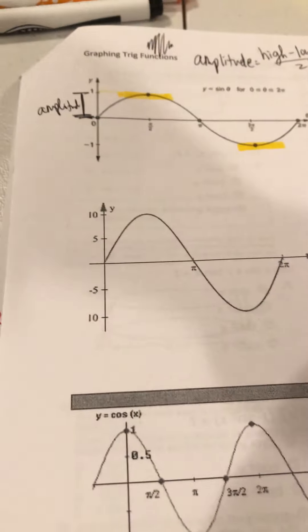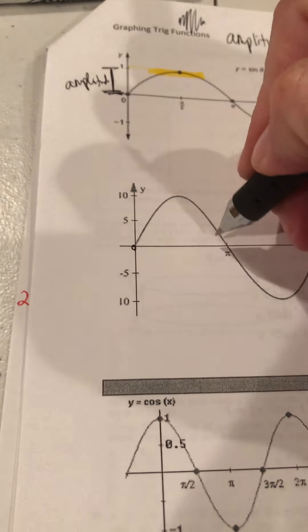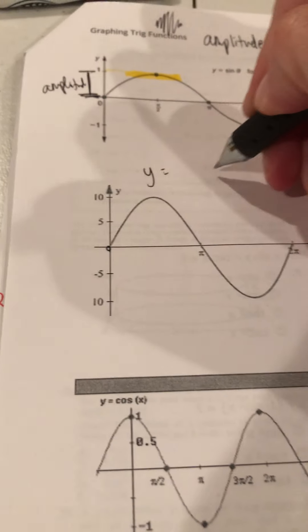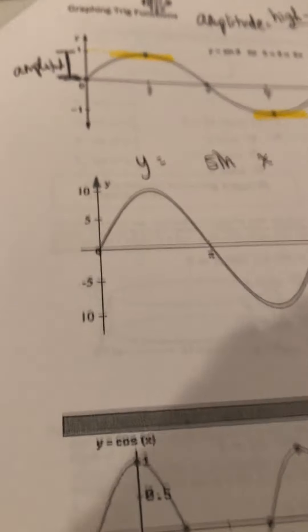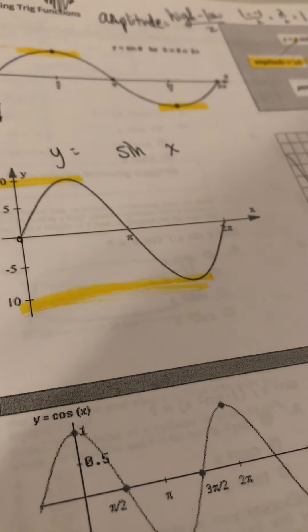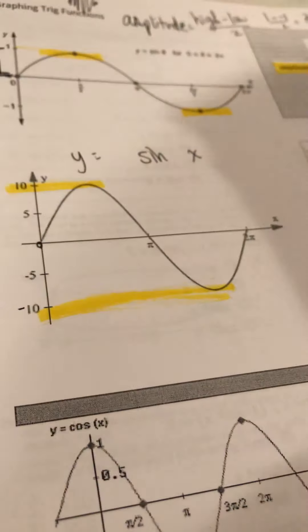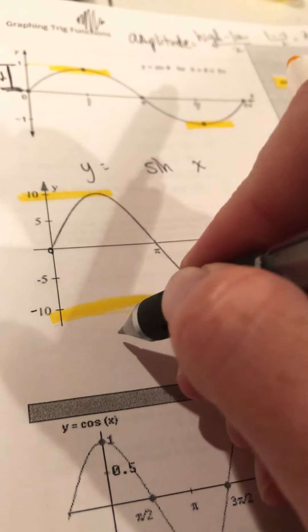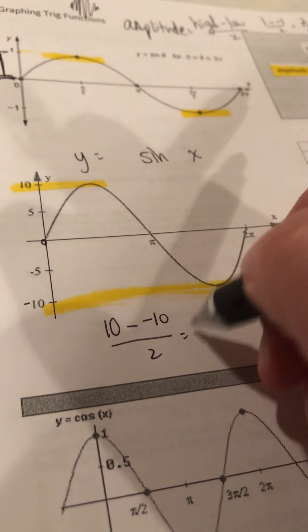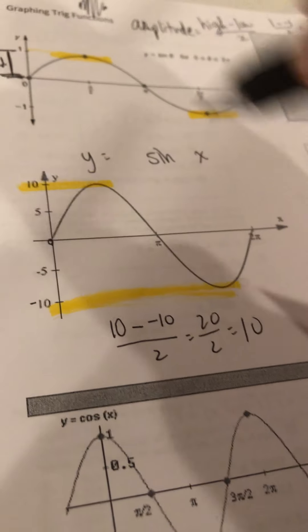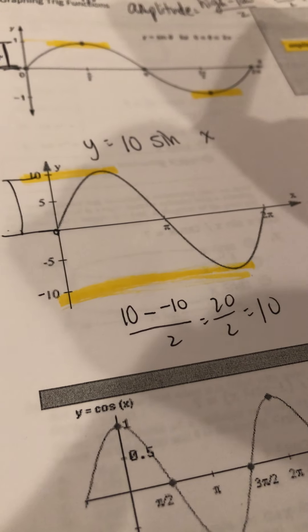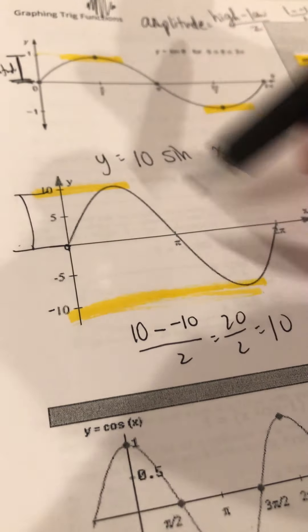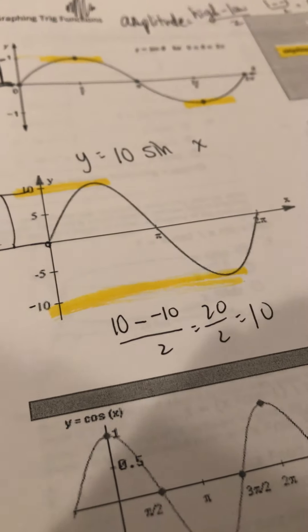If a graph goes through the origin making an S-shape, that's sine. If it goes around the origin at (0,0), it's cosine. Looking at this example — it's sine because it goes through the origin, so we start with y = sine. The highest point is 10 and lowest is -10, so amplitude = (10 - (-10))/2 = 10. It hasn't shifted up or down and ends at 2π, so we're done.